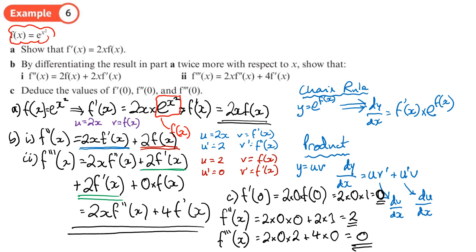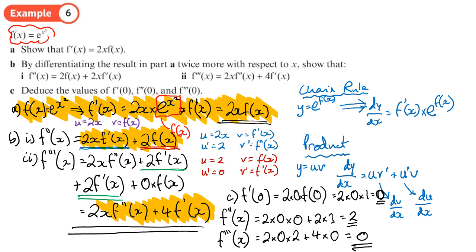This idea of repeated differentiation and working out each derivative at 0 is going to be very useful in the next section, and using these patterns is very useful. So to highlight the final answers: the working for part A was done, the answers for each part of B were found, and f'(0) = 0, f''(0) = 2, and f'''(0) = 0. You should now be able to do exercise 2b on page 39.